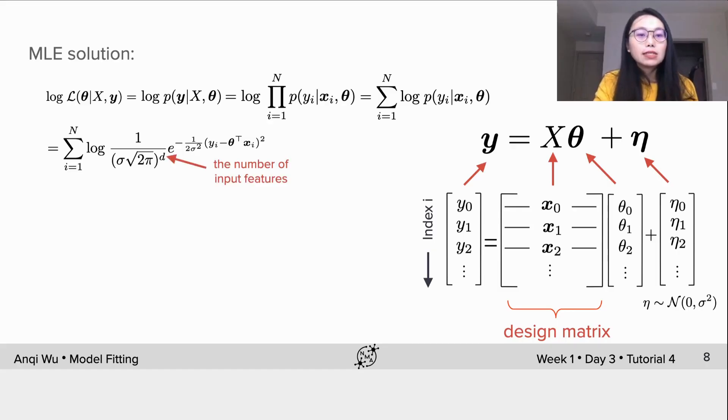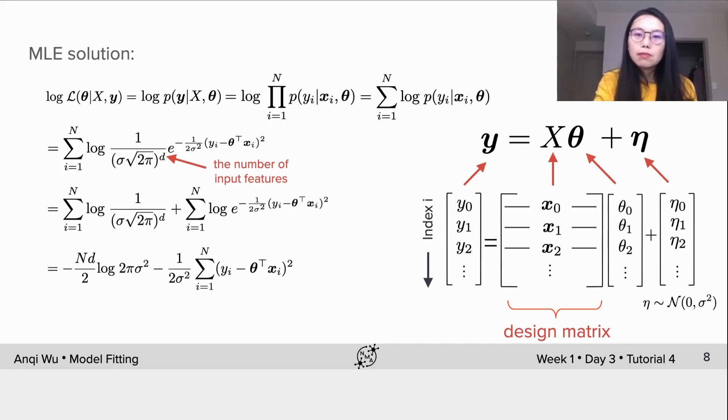Here, d is the number of input features, or the number of elements in the vector theta or x. Then we separate the log term into two terms. The first term doesn't involve data index i, thus it's constant across data points and can be written as n multiplying d over 2 multiplying log 2 pi sigma square. And in the second term, logarithm is cancelled by exponential, therefore leaving us this quadratic form. We could finally rewrite the summation of quadratics into vector multiplication.